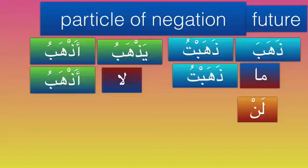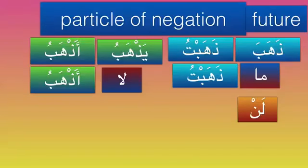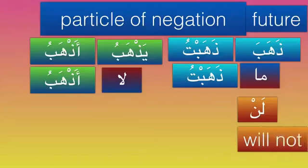What is the difference between 'ma', 'la', and 'lan'? 'Ma' and 'la' do not have any effect on the fi'l. We know maadi is mabni — it does not change under any circumstance. Whereas mudari is mu'rab, so it can be marfu', mansoob, and majzoom. 'La nafia' does not change the fi'l. But 'lan' is harfa nasb — it makes the fi'l mansoob. 'Lan' means 'will not' — lam and nun — will not.